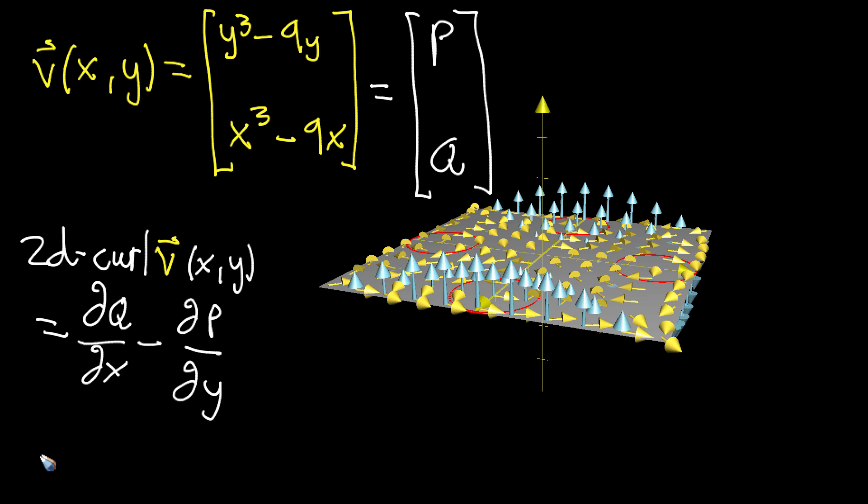And what we get when we do that, the partial of q with respect to x, so we take the partial derivative of this with respect to x, that just looks like a derivative since there's only x's in there, and you get 3x squared minus 9. And I actually did this, there's another video where this is the example that I do. When you take this second derivative of p with respect to y, you're taking the derivative of this top part with respect to y, and that's 3y squared minus 9.